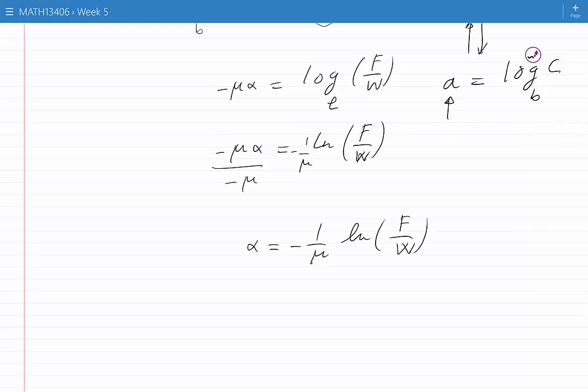Now let's plug in the values given in part 2 of this problem. The values are mu to be equal to 0.085, ln of F to be 120 pounds, and then W to be 200.